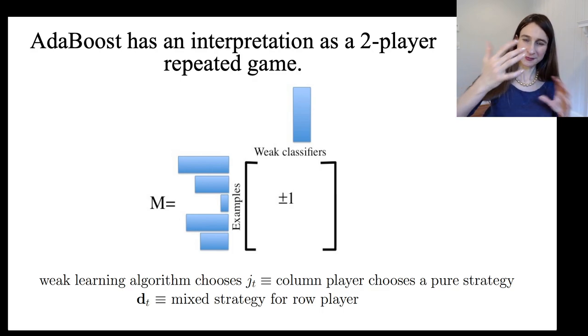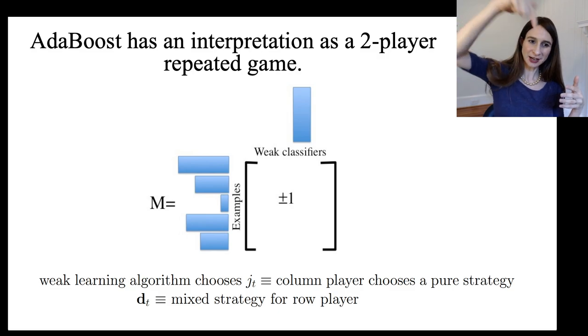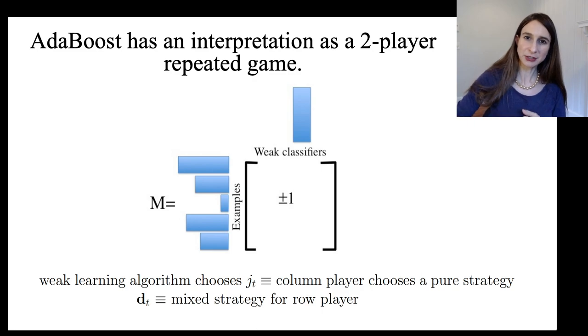And so as time goes on, the row player keeps changing its mixed strategy and then the column player has to respond to it by choosing a different weak classifier. And this goes on over and over again.